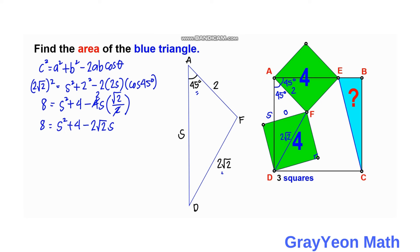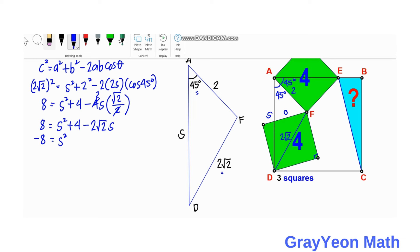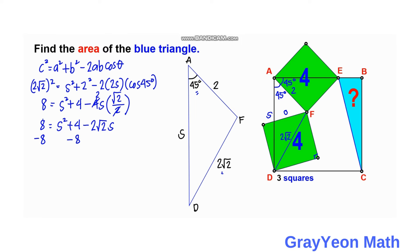We are ending up with a quadratic equation. Subtracting 8 from both sides gives: S² − 2√2·S − 4 = 0.